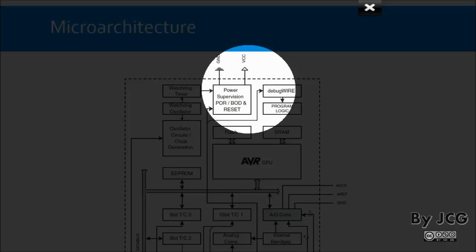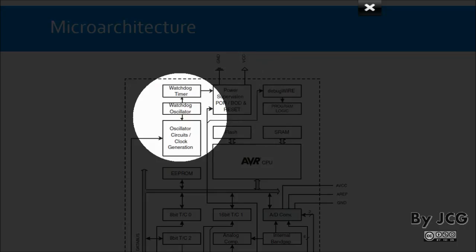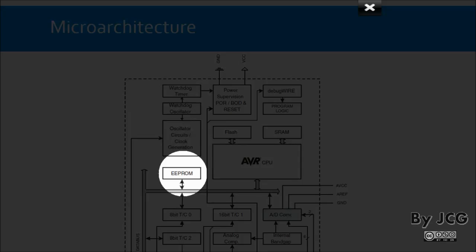Next is the supervision for power. The BOD — brown-out detection — means the microcontroller can detect when voltage is dropping and respond accordingly. Over here we have the oscillator, which is the system clock. We also have a watchdog oscillator and watchdog timer, a peripheral that monitors whether the microcontroller is working properly. Another element is the EEPROM, also used for data. Unlike RAM, data in the EEPROM is stored permanently even when power is lost.